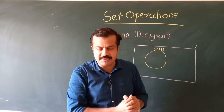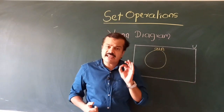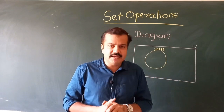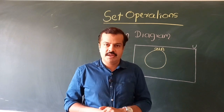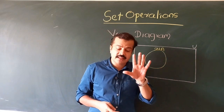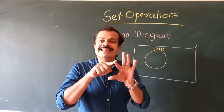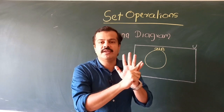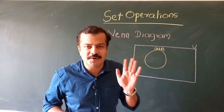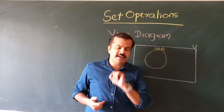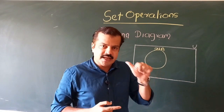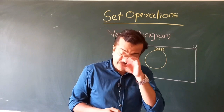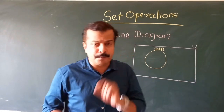Even though elements of a set can be anything, like numbers there are certain mathematical operations that can be applied to sets as well. We have five different types of set operations: one, the union of sets; two, the intersection of sets; three, the difference of sets; four, the complement of sets; and five, the partition of sets. Today in this session we will look at the first two operations, which are the most important.